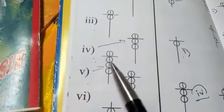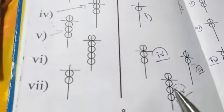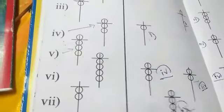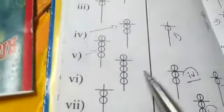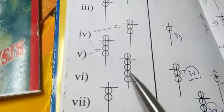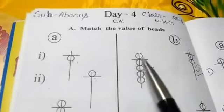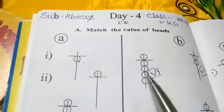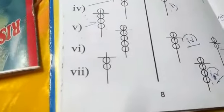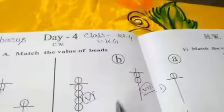Question number five: how many are there? Five, six, seven, eight. So here, eight — five, six, seven, eight. Question number six and seven: two — two, two, two. Seven, seven, seven.